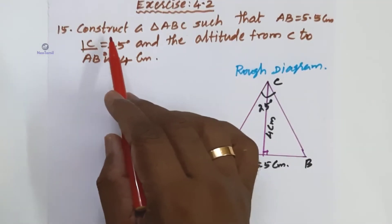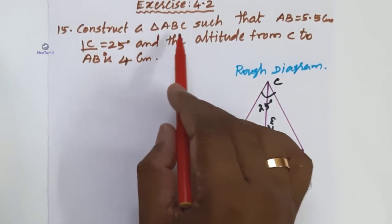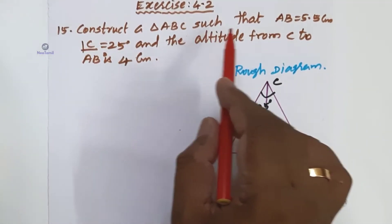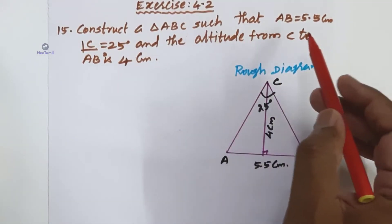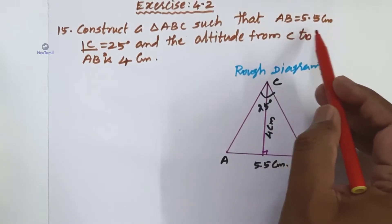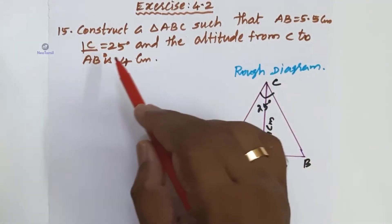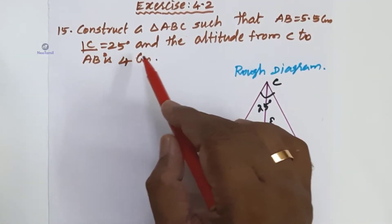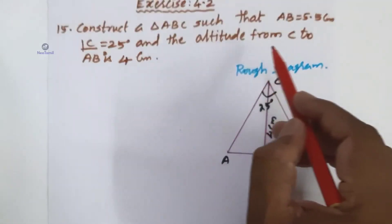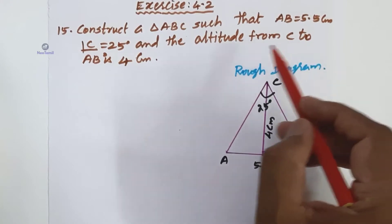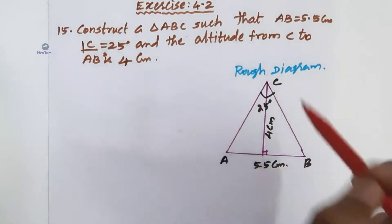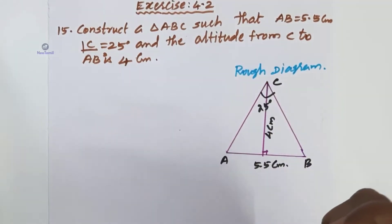The 15th question is: construct a triangle ABC such that AB is equal to 5.5 centimeters, angle C is equal to 25 degrees, and the altitude from C to AB is 4 centimeters.